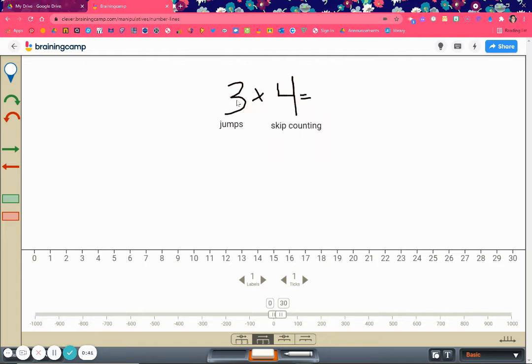So because I have 3 times 4, that tells me I need to have 3 jumps. Let's start with 1.